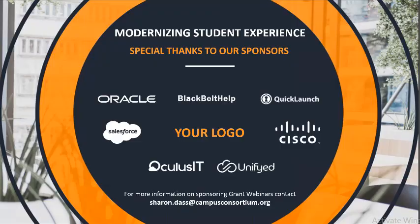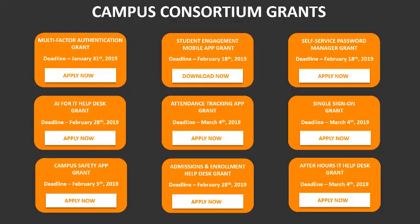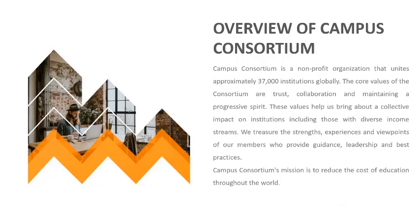For those unfamiliar with Campus Consortium, it is a nonprofit organization established in 2003 when a group of universities — including Montana, Oklahoma, RIT, and Washington State — came together and said we need a shared service model that enables us to deliver IT and education more cost-effectively, so we can avoid reinventing the wheel. In this case, we're looking at AI and how to understand the difference between platforms like Dialogflow and Rasa within our institutional context.